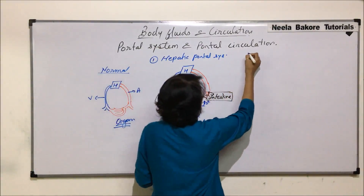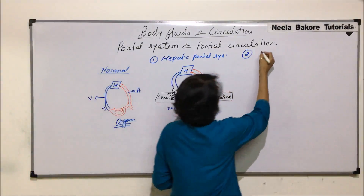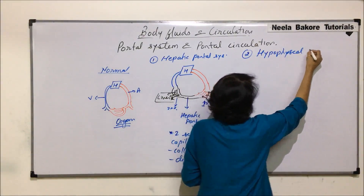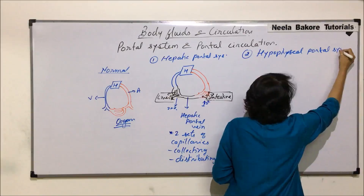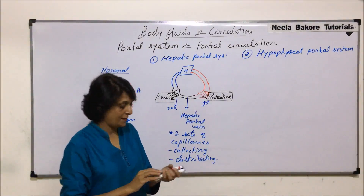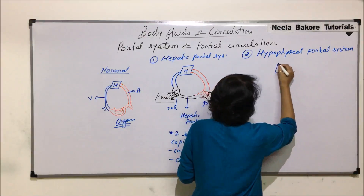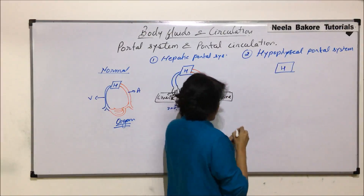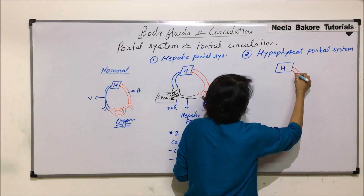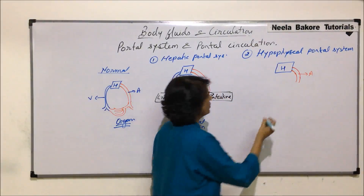In human beings, the hepatic portal system is very well developed. There is one more system which is also very well developed in humans, known as the hypophysial portal system. Here, the intermediate organ is the hypothalamus. The heart pumps oxygenated blood to the hypothalamus via an artery.